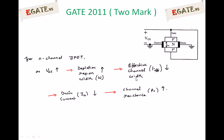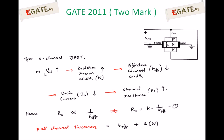As the depletion region width increases, the effective channel width decreases. The depletion region does not penetrate into the P-plus side; it always penetrates into the N side — that is, into the channel — because depletion region always penetrates more into the lightly doped side. So the effective channel width reduces, current from drain to source reduces, and channel resistance increases. Therefore, channel resistance is inversely proportional to effective channel width.